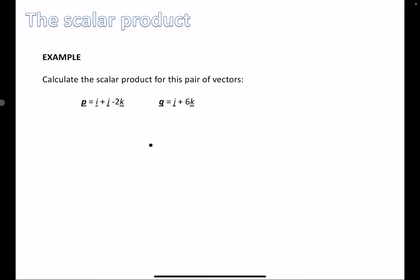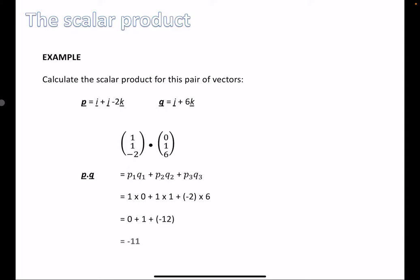We're going to calculate the scalar product of these pairs of vectors. Vectors can be written in different forms — this one is in terms of unit vectors i, j, and k — but we can rearrange to the column vector form. So p becomes (1, 1, -2), and q — careful here, there's no i term — becomes (0, 1, 6). Using our formula, we multiply corresponding components and add: (1×0) + (1×1) + (-2×6) = 0 + 1 - 12 = -11.